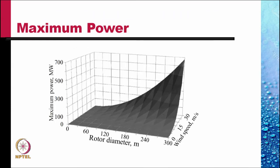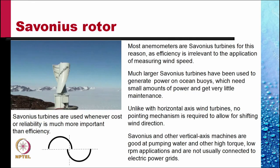This three-dimensional curve shows the maximum power that is produced as a function of rotor diameter and wind speed. There are other kinds of windmills rotors.